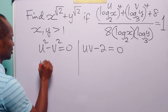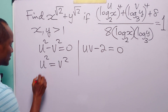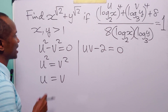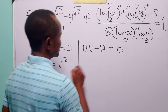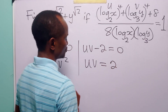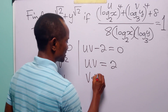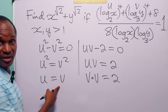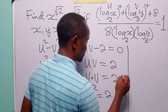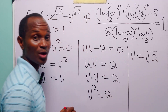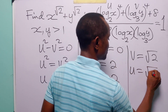From u squared minus v squared equals 0, we get u squared equals v squared. Taking the square root of both sides, since x and y are both greater than 1, u and v must both be positive, so u equals v. From uv equals 2 and u equals v, we get v squared equals 2. Taking the square root, v equals the square root of 2, and therefore u also equals the square root of 2.